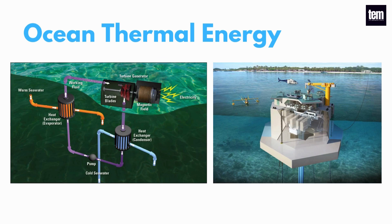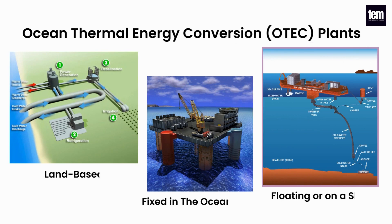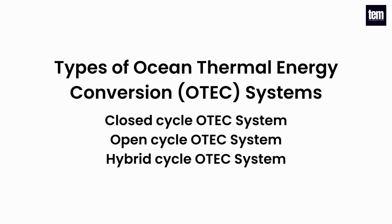Ocean thermal energy is generated by converting the temperature difference between the ocean's surface water and deeper water to run a heat engine and produce useful work, usually in the form of electricity. This energy from the sun heats the surface water of the ocean. The temperature difference between the deep and shallower surface parts is maximum in the tropics, at 20°C to 25°C. Ocean thermal energy conversion plants may be land-based, fixed on the ocean floor, floating, or on a ship. Types of ocean thermal energy conversion systems are closed cycle, open cycle, and hybrid cycle systems.